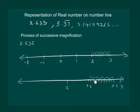Now our number is 2.635. That means it will lie between 2.63 and 2.64. So let us magnify once again.